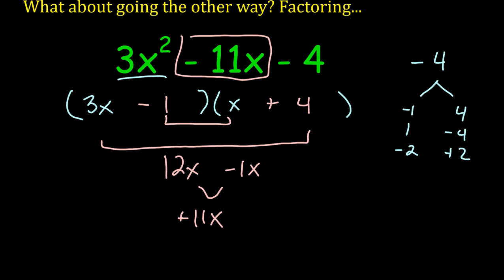So obviously this doesn't work. So maybe let's try switching them around. Instead of minus 1 on the left and plus 4 on the right, let's try doing 3x plus 4 and x minus 1. 3x times negative 1 is negative 3x, and 4 times x is 4x. So when I combine these, I get just 1x. So no, that's not right either.